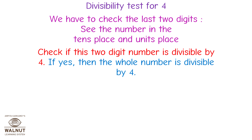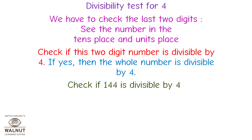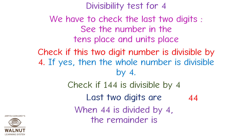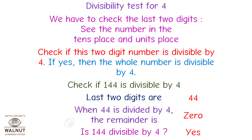Divisibility test for 4. We have to check the last two digits. See the number in the 10's place and the unit's place, and check if this two-digit number is divisible by 4. If yes, then the whole number is divisible by 4. Check if 144 is divisible by 4. Last two digits are 44. When 44 is divided by 4, the remainder is 0. Therefore, is 144 divisible by 4? Yes!